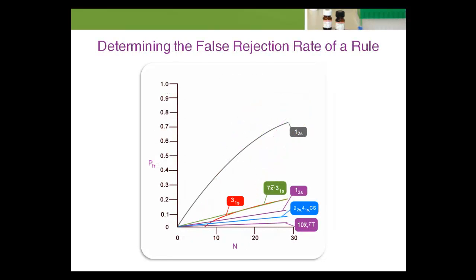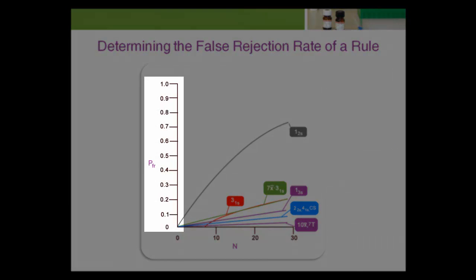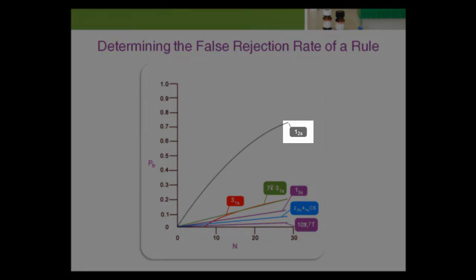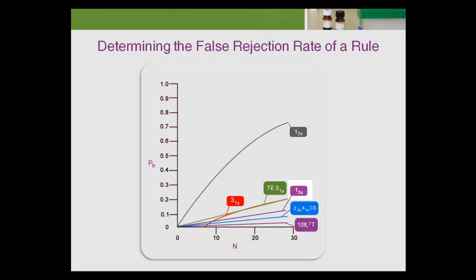Each QC rule also has a false rejection rate, or probability of false rejection. This plot shows the false rejection characteristics of a number of different QC rules. The vertical axis is the probability of false rejection. The horizontal axis is the number of times the rule is evaluated. Note that the 1-2-S rule is above the other rules, and the 1-3-S rule is near the bottom. A single 1-2-S rule evaluation has a false rejection probability of about 4.9%, or approximately 1 in 20. A single 1-3-S rule evaluation has a false rejection probability of about 1%, or 1 in 100.